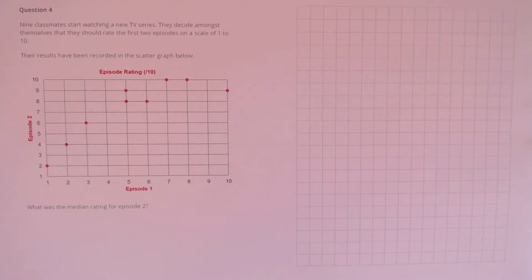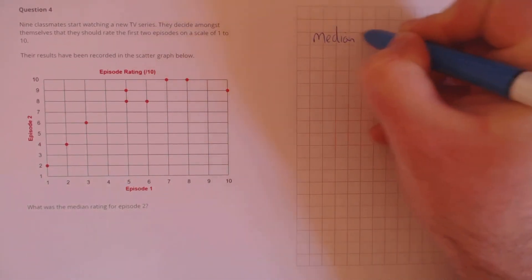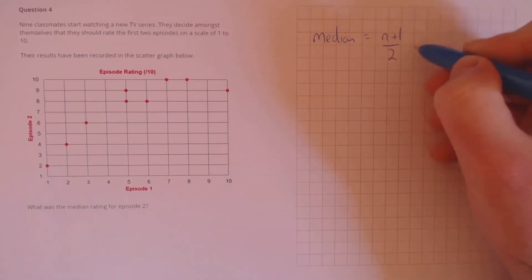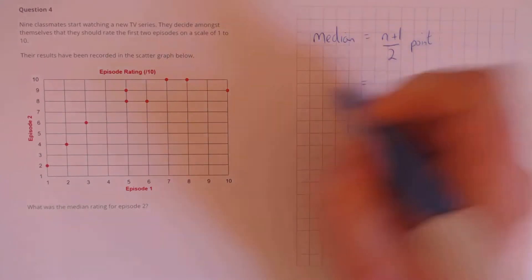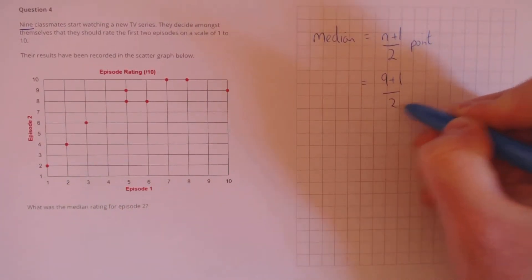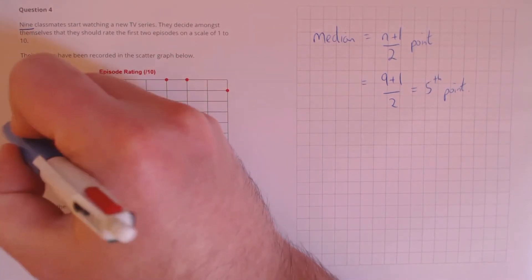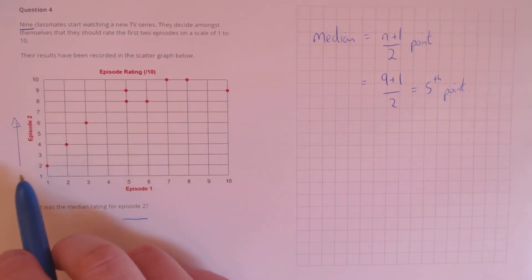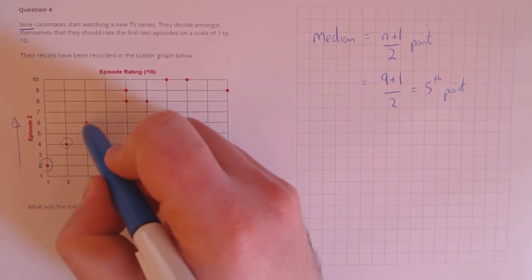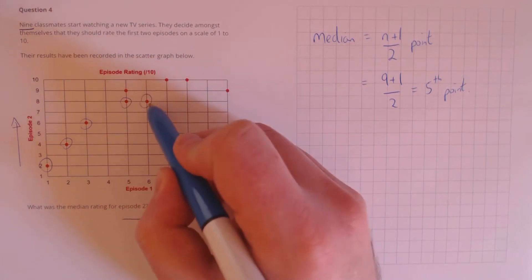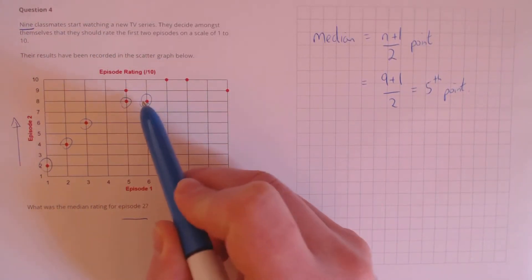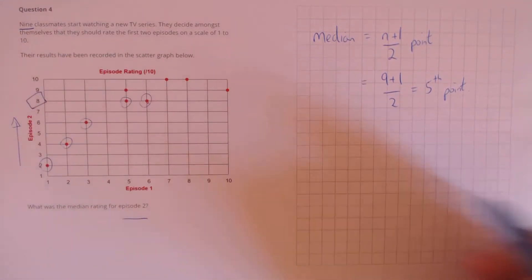Question 4. Nine classmates rate the first two episodes on a scale of 1 to 10. What was the median rating for episode 2? The median is given by the (n+1)/2 th point; with n=9, that's the fifth point. Looking at episode 2 on the y-axis, counting in ascending order: values of 2, 4, 6 — that's three points — then 4, then 5. This fifth point is the median, which had a score of 8.